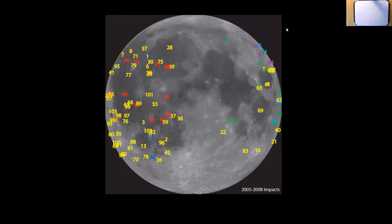Hello, everyone. Wanted to show you a couple of these slides before we get into the space program. Here's a slide of the moon showing asteroid impacts from larger asteroid impacts from 2005 to 2008. Notice where they are - they're not uniform on the whole moon. Most of them are over here, and there are some over here. Why do you think most of them would be over here?